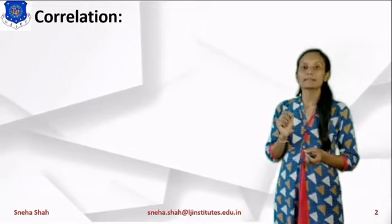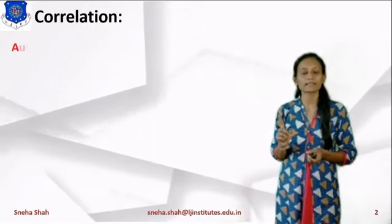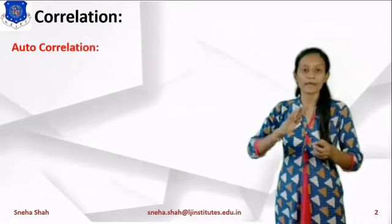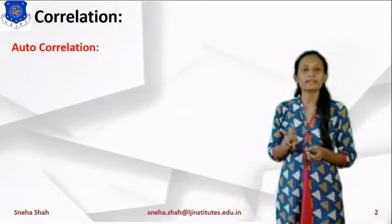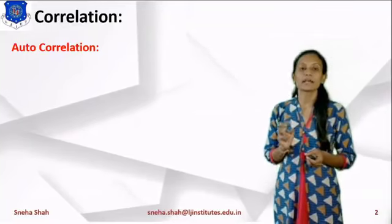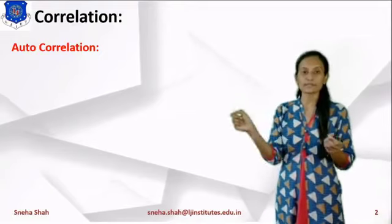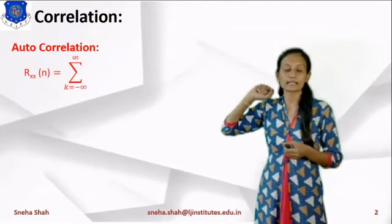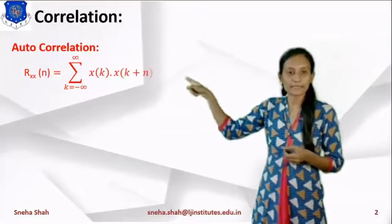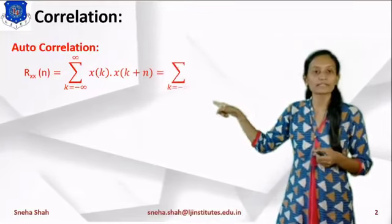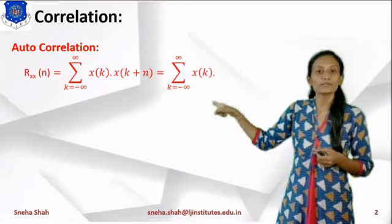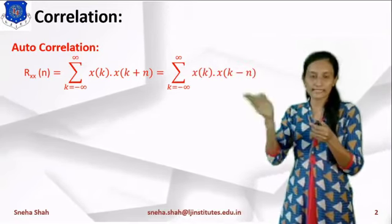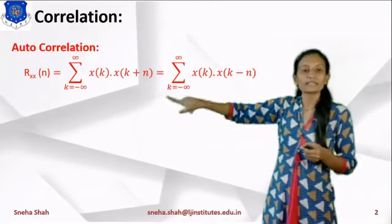So this will be considered as correlation. There are basically two types of correlation. The first type is auto-correlation. Auto-correlation means the relation of a signal with itself but at another instant of time. The auto-correlation equation is represented as r of x with itself: rxx of n equals to summation k equals to minus infinity to infinity of x(k) into x(k+n). Or we can also take k minus n — you can shift toward right side or left side, so we can use both terms.